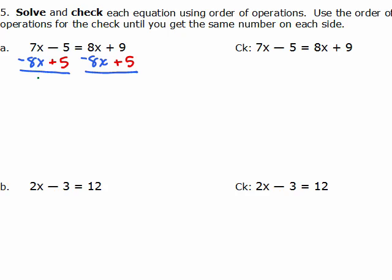So 7x minus 8x is negative 1x, or negative x, and these cancel — negative 5 plus 5. Over here these cancel, 8x minus 8x, so I have 9 plus 5, or 14. This says negative x is 14, so we can multiply or divide both sides by negative 1, so that x equals negative 14.